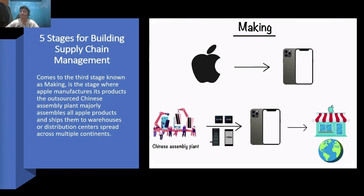The third stage is known as making. This is the stage where Apple manufactures its products. The outsourced Chinese assembly plant majorly assembles all Apple products and ships them to warehouses or distribution centers spread across multiple continents. The products are created, manufactured, tested, and packaged and synchronized for delivery at this step. Supply chain managers are tasked with arranging all manufacturing, testing, packaging, and delivery preparation activities.